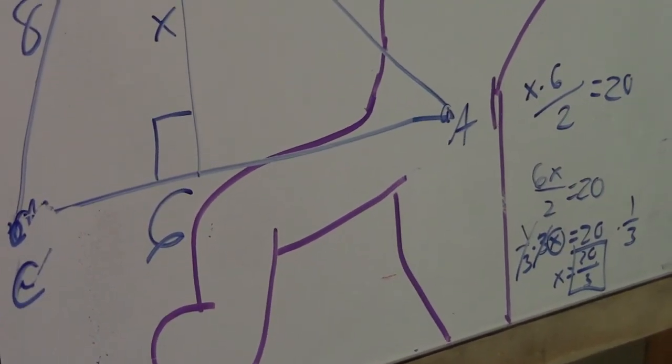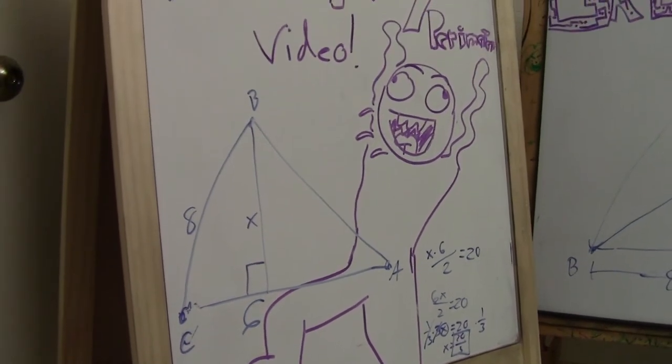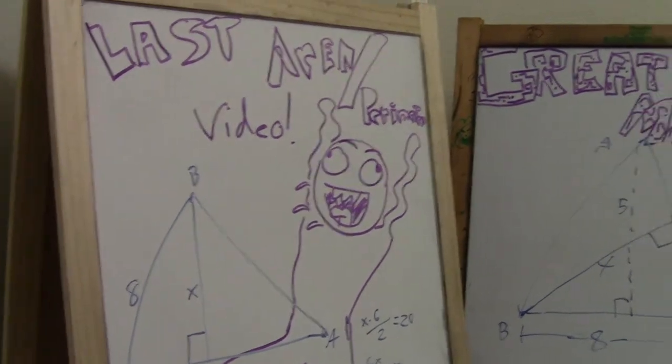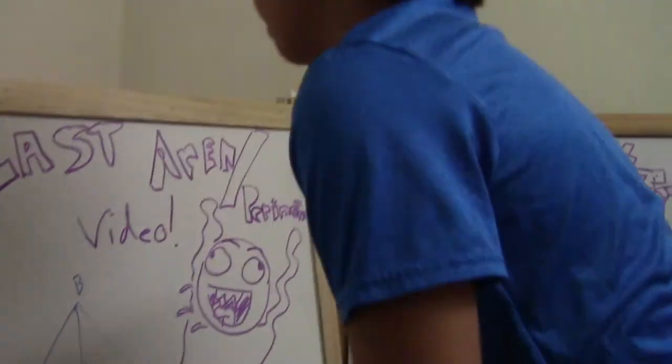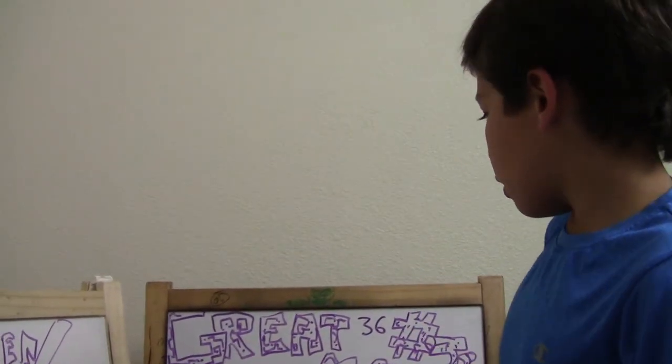That is the end of our very last area and perimeter video. Yes. And if you did like this video, please do subscribe to Great Math and also give a big thumbs up to Great Math. And this is Great Math number 36 with me JP, and I'll see you next time at number 37. Goodbye.